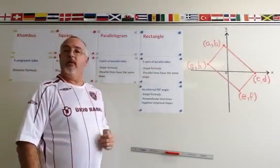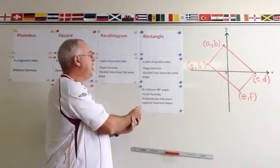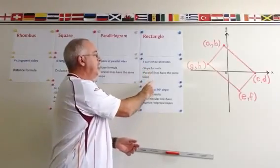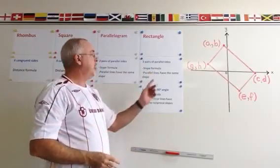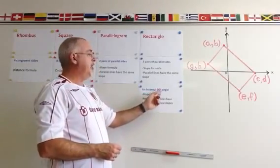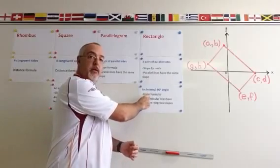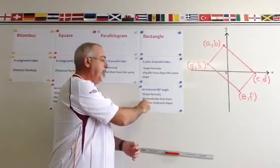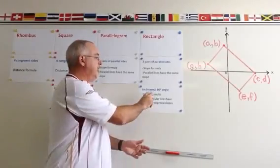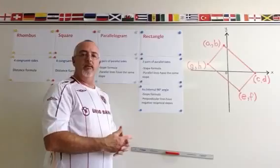If we are asked to prove a rectangle: all rectangles are parallelograms, so the beginning of our proof is the same. We have to prove that we have two pairs of parallel sides using the slope formula, and we have to make it clear that we know parallel lines have the same slope. We also have to prove that we have an internal 90-degree angle, which means that we have to use the slope formula and the fact that perpendicular lines have negative reciprocal slopes. So we have to show that two of the slopes we are using to demonstrate the 90-degree angle are the negative reciprocal of each other.